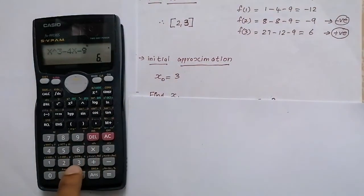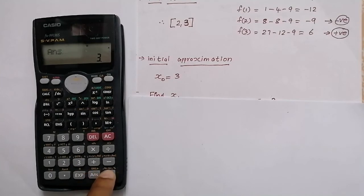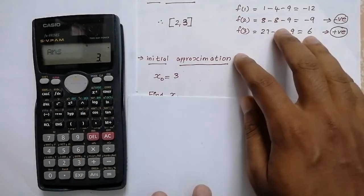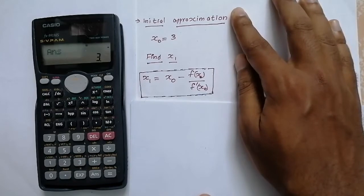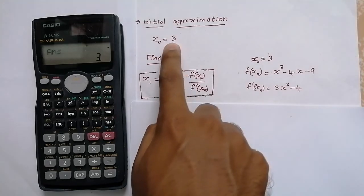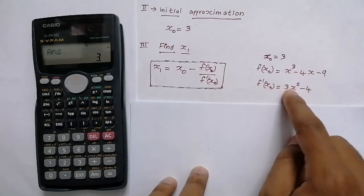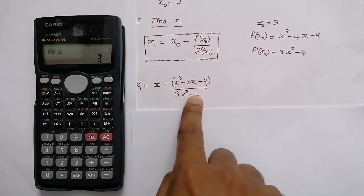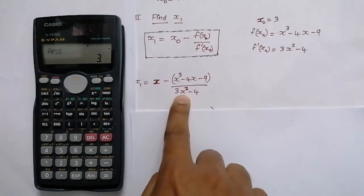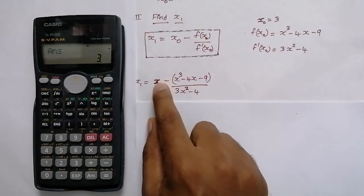In the calculator, type 3 then press equal to. When we type ANS in the calculator we will get the value 3, meaning the initial approximation is set as 3. Now we need to find X1. The Newton-Raphson equation is X₀ minus f(X₀) divided by f'(X₀), where f(X) is the equation itself and f'(X) is its derivative.